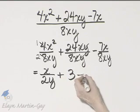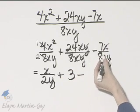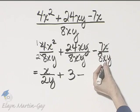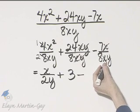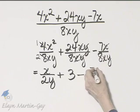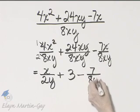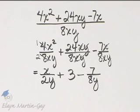And then minus, here the x's divide out, or again you can think of this as x raised to the power of 1 minus 1, but that would be x to the 0, or 1, but I have 7 over 8y. There is my result.